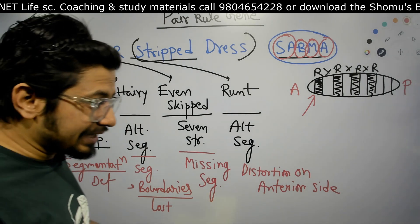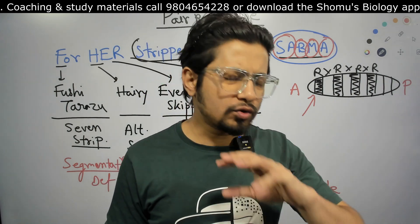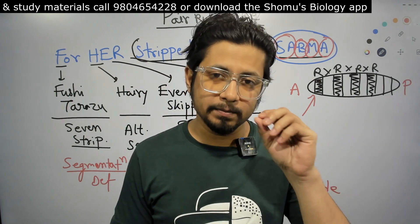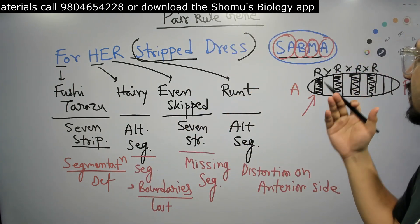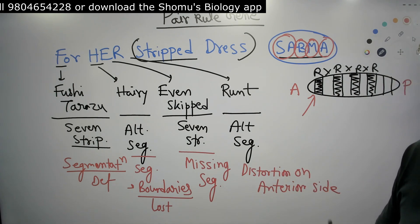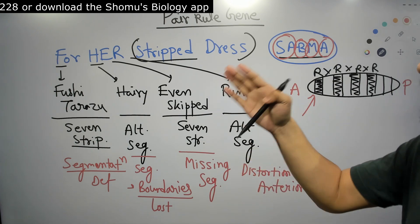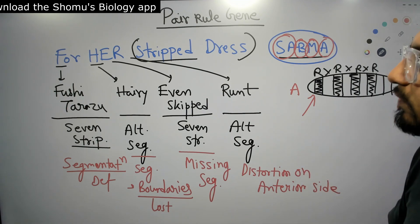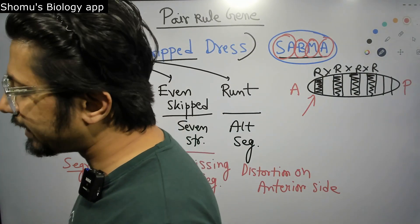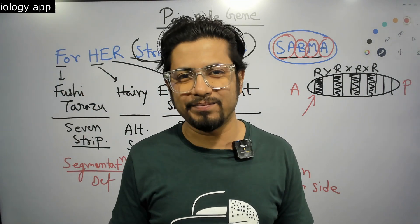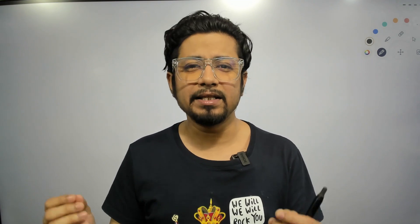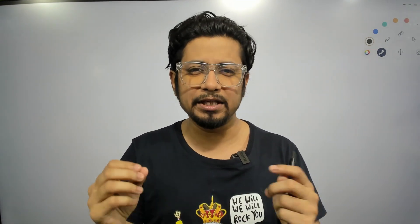This mnemonic — 'For her striped dress, Sabma' — gives you so much information that you can write a whole page of data just by knowing it. Although Sabma is not a very common name in India, it is an Arabic name. From this one sentence, you can get all the vital information about pair rule gene names, their function, and what they do in Drosophila development. Five to seven minutes of this lecture can clear a lot of information and help you ace the exam.